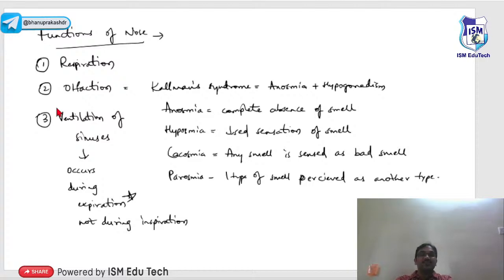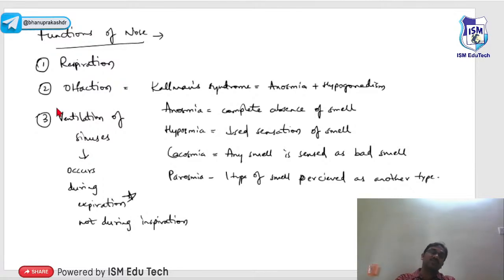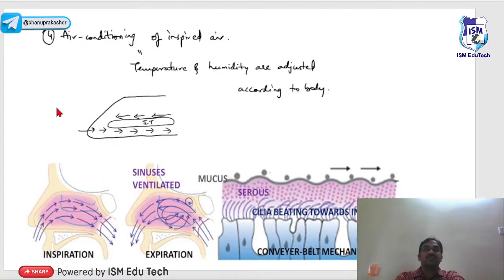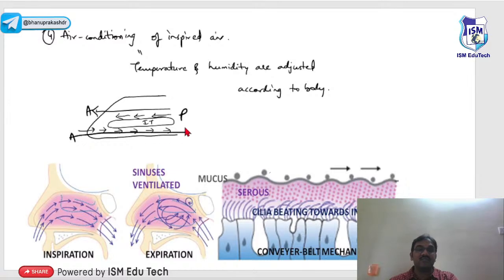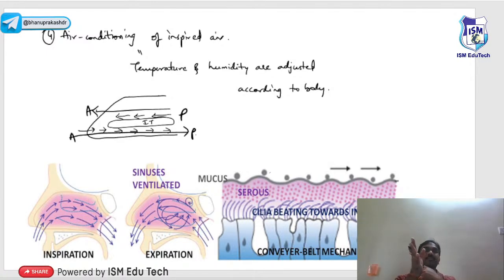Kallmann syndrome is anosmia associated with hypogonadism. Anosmia means complete absence of smell; hyposmia means decreased sensation of smell; cacosmia means any smell is perceived as bad (commonly reported in post-COVID cases); parosmia means one type of smell is perceived as another. Regarding air conditioning: inferior turbinate blood flows posterior to anterior while inspired air flows anterior to posterior, maximizing heat convection.